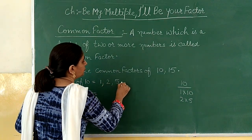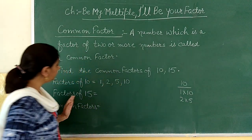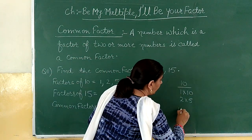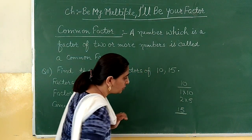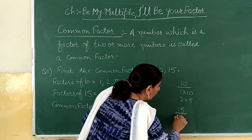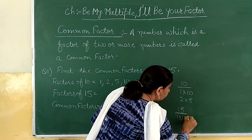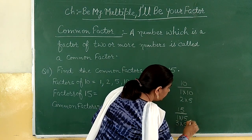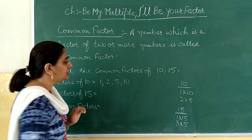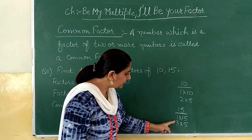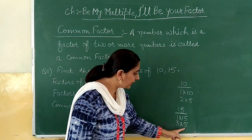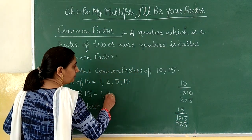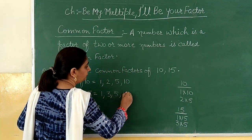Now we will write all the factors of fifteen. One times fifteen will give you fifteen, and three times five will give you fifteen. So from here, one, three, five and fifteen — these are the factors of fifteen.